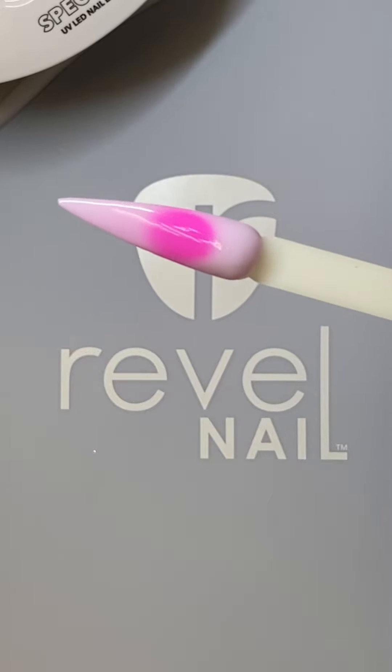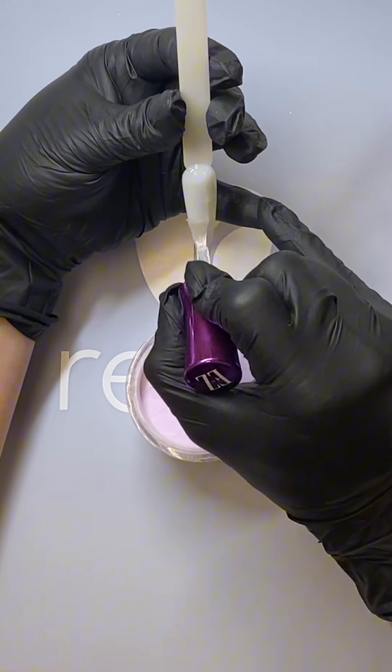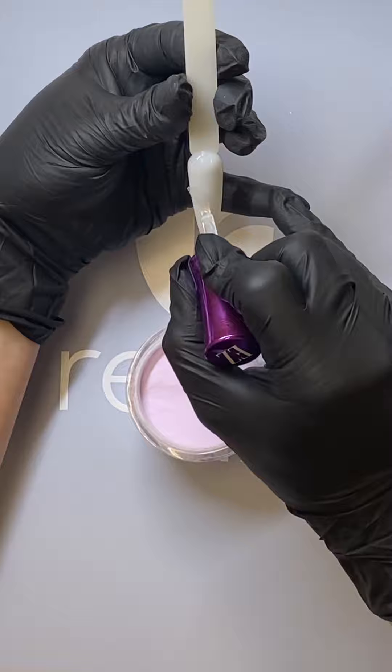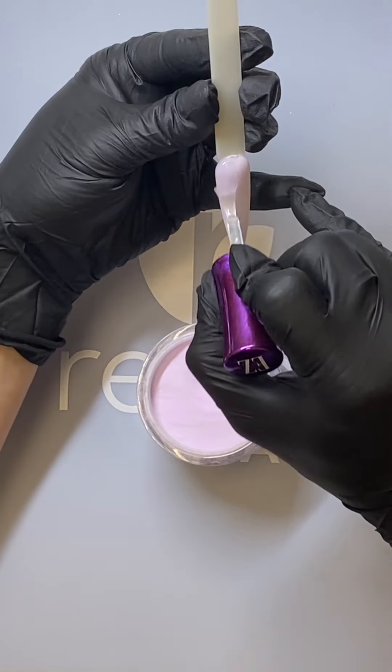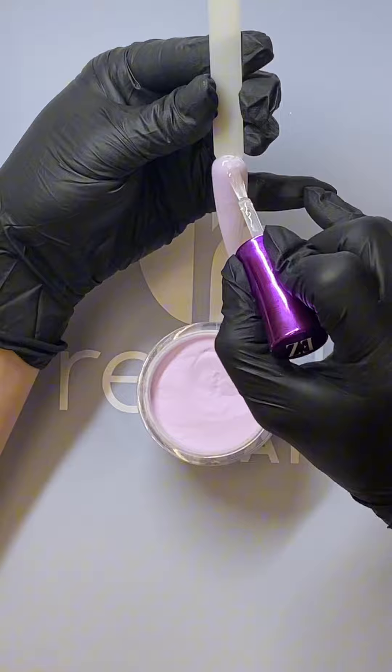Today we're going to be recreating a popular trend also known as Aura Nails. You can start by applying your base shade. We're using D363 Lola. We applied two layers of Lola to get the color payoff that we are looking for.